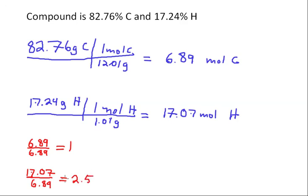We need to remember that empirical formula means the lowest whole number ratio of elements present in a compound. 1 to 2.5 doesn't really meet that criteria. So I'm going to take both of these values and multiply them by 2.